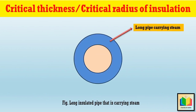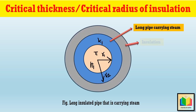Let us formulate the equation for the critical thickness of insulation. Consider a long pipe carrying steam at temperature Ti with thermal conductivity k1. The pipe has an inner radius r1 and an outer radius r2. Hi is the heat transfer coefficient at the inner surface. The pipe is completely covered with insulating material of thermal conductivity k2, extending to a radius r3 from its center. Ho is the heat transfer coefficient at radius r3.